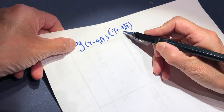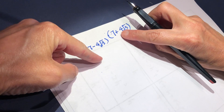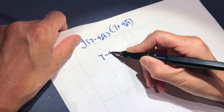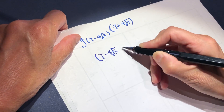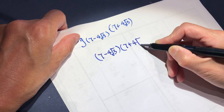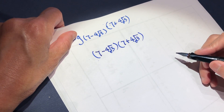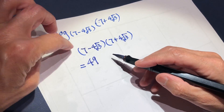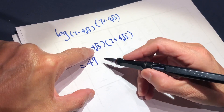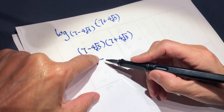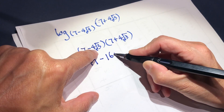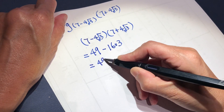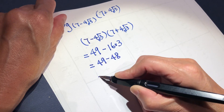And we know one thing: whenever you see this kind of expression — the same number, one with a plus sign, one with a minus sign — you automatically think about rationalizing it. And it can be rationalized. Seven times seven equals 49, and the square of four root three — with the negative sign — gives four times four is 16, and root three times root three is 3. So 49 minus 48 equals 1.